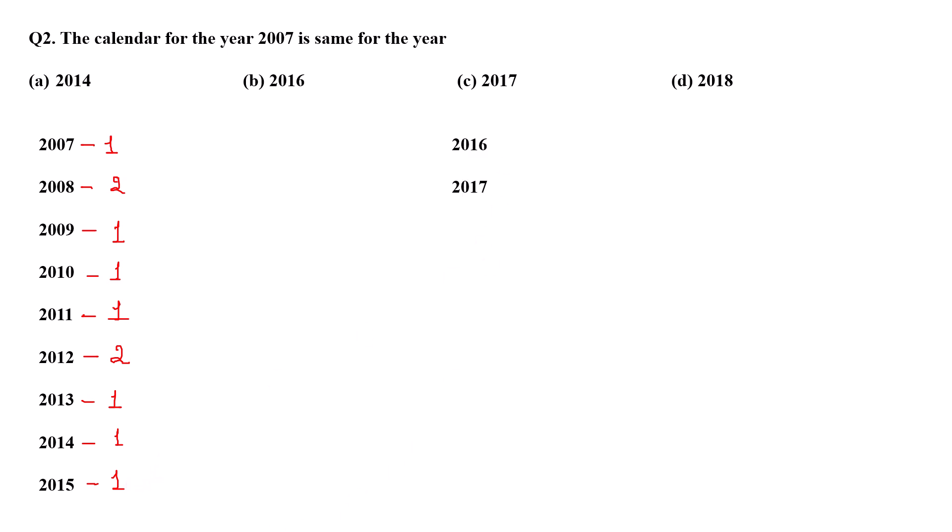So 2016 again will have two odd days and 2017 will have one odd day. Now you count and see: 1 plus 2, 3, 4, 5, 6, 7, 8, 9, 10, 11, 12, 13, 14. Now you got 14 odd days and 14 odd days if you divide by 7 it is completely divisible. So the year which will be same as 2007 will be the year after 2017 which is 2018. So the answer will be D option. I hope it is clear now to everybody that how to solve these type of questions.